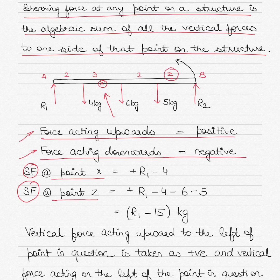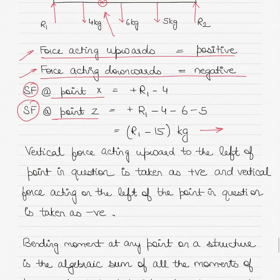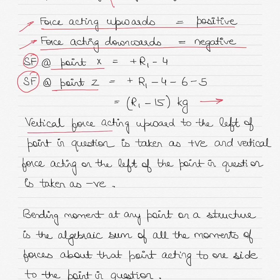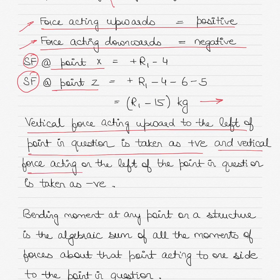The shearing force at point Z will be R1 - 4 - 6 - 5, or R1 - 15 kg, which is the sum total of 4, 6 and 5. Vertical force acting upwards to the left of the point in question is taken as positive, and vertical force acting on the left of the point in question but downwards is taken as negative.